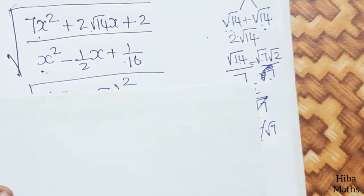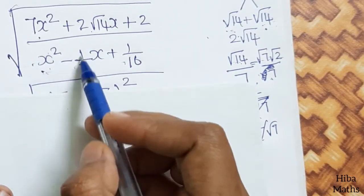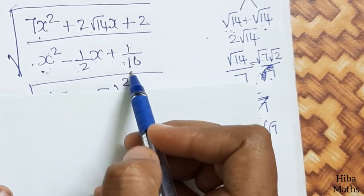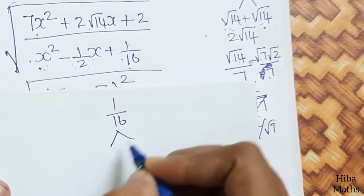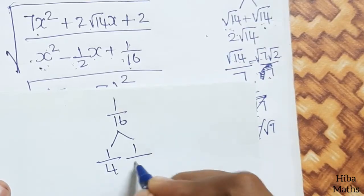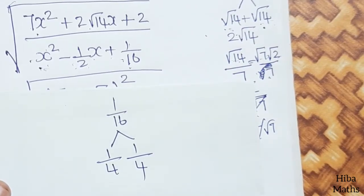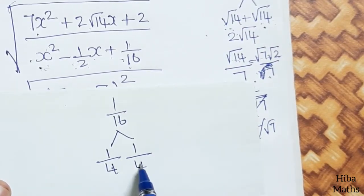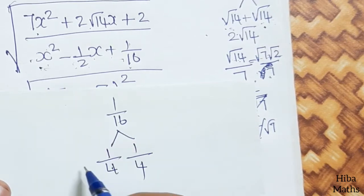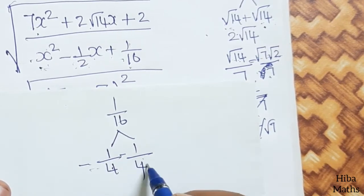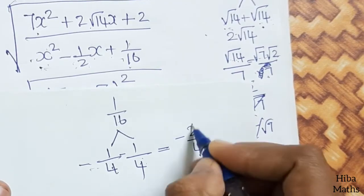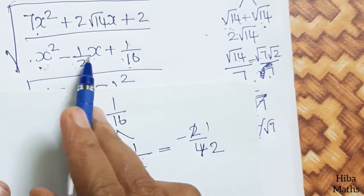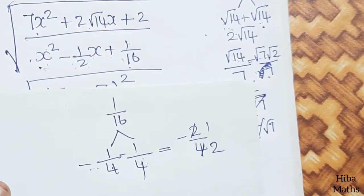We factorize: x² minus 1/2 times x plus 1/16. Now 1/16 can be written as 1/4 times 1/4, and 2 times 1/4 gives 2/4 which equals 1/2. So adding and subtracting gives us 2 by 4 minus 2 by 4, confirming the middle term is minus 1 by 2.